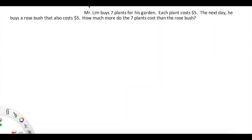Okay, we are going to look at one more problem here. This problem, we are going to change the name to our principal. This problem, we will think about Dr. Allison buying plants. Okay, let's go ahead and read this. Dr. Allison buys seven plants for his garden. Each plant costs $5. The next day, he buys a rosebush that also costs $5. How much more do the seven plants cost than the rosebush?